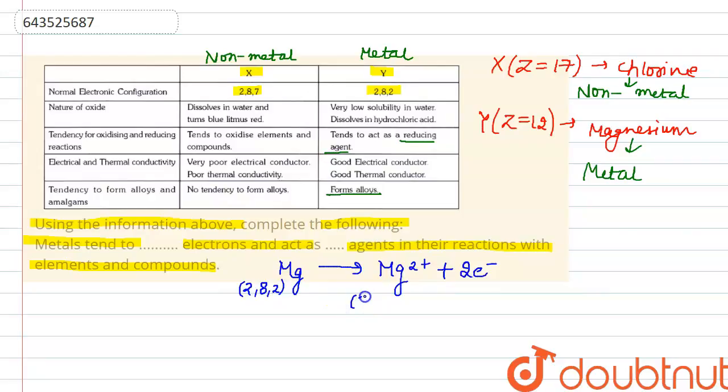Therefore we can say metals tend to donate electrons, to donate electrons, and they act as reducing agent.